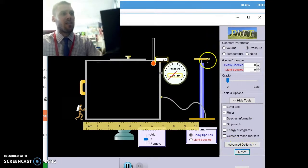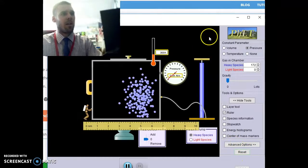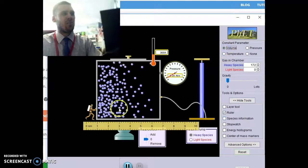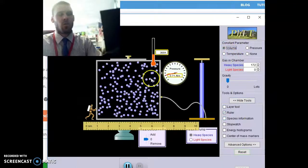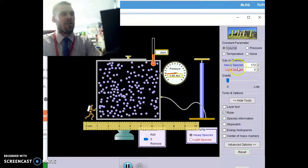I'm going to go ahead and reset this. Let's get some gas particles in here. Whenever that guy starts moving, I just click on volume as a constant parameter. That's a nice way to avoid that little glitch for the system.